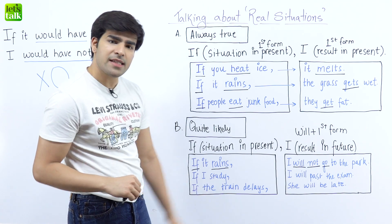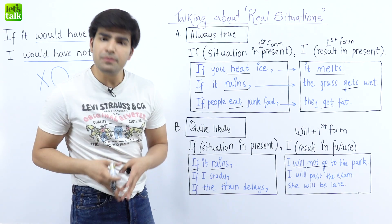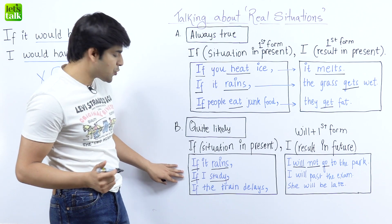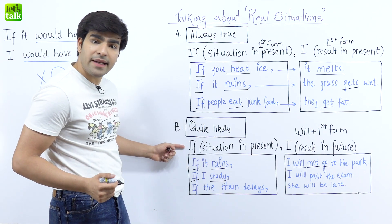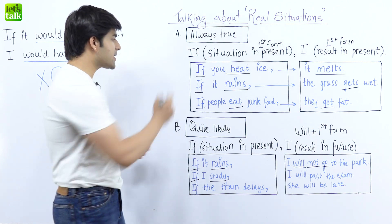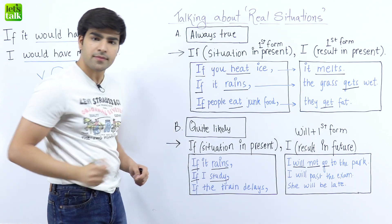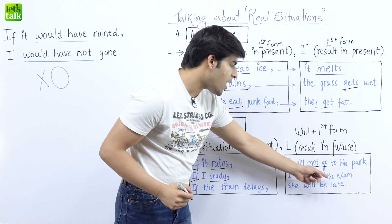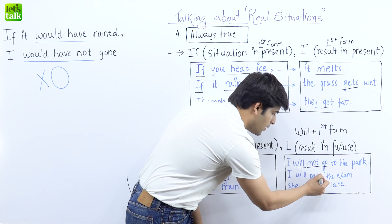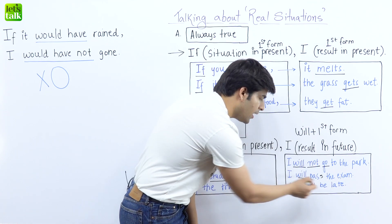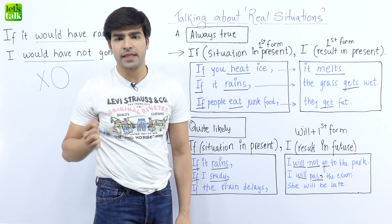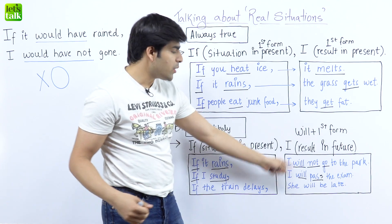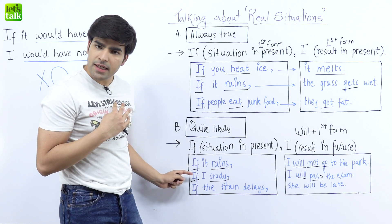Let's move to the second example: if I study — using 'if' with a situation in the present — I will pass the exam. I'm using 'will' and 'pass'. 'Pass' is the first form. Going with the rule: will plus first form. If I study, I will pass the exam. If I make the video, you will watch it.